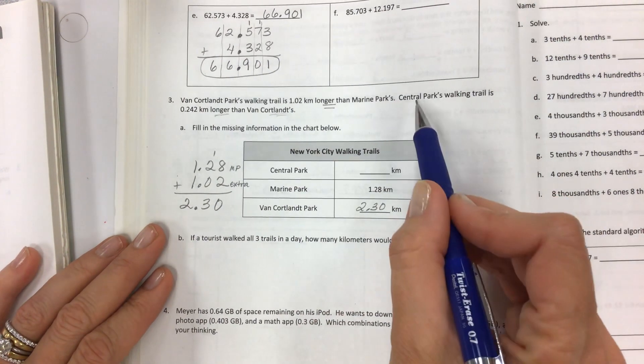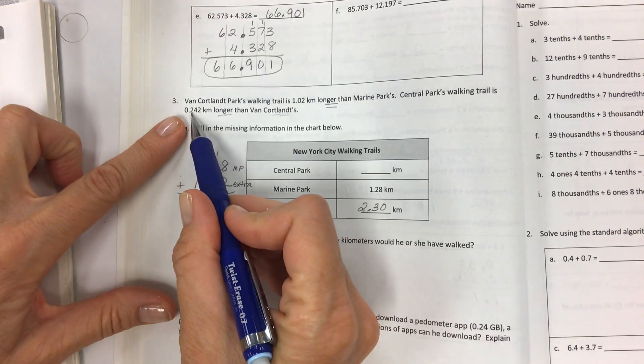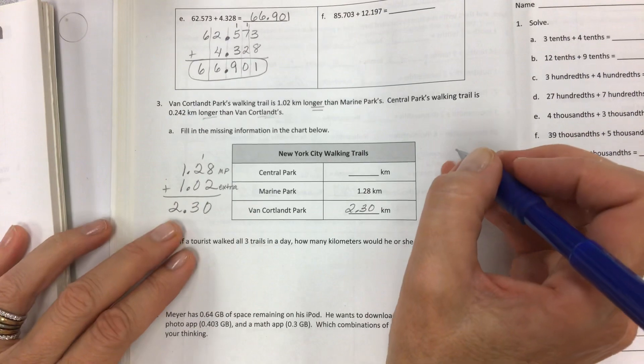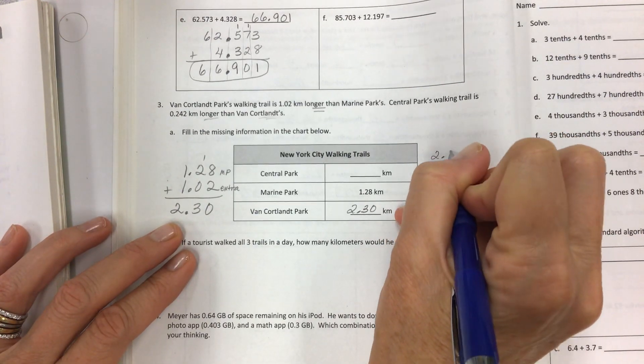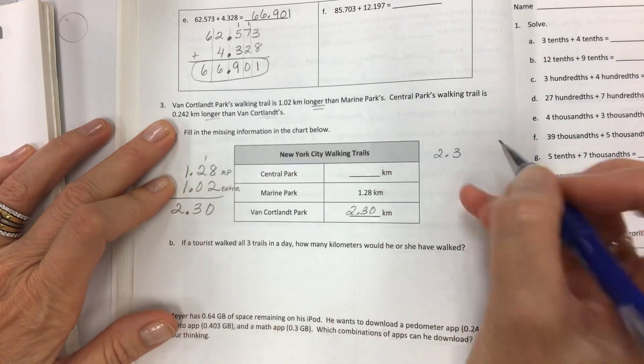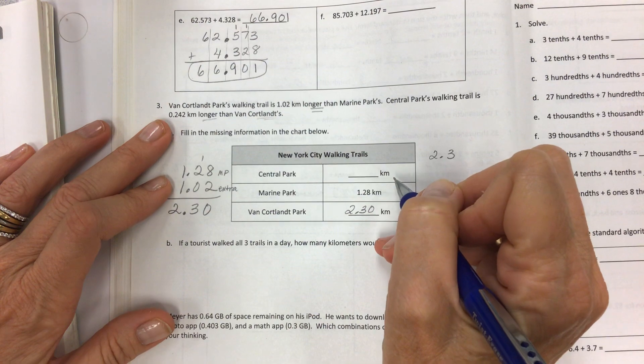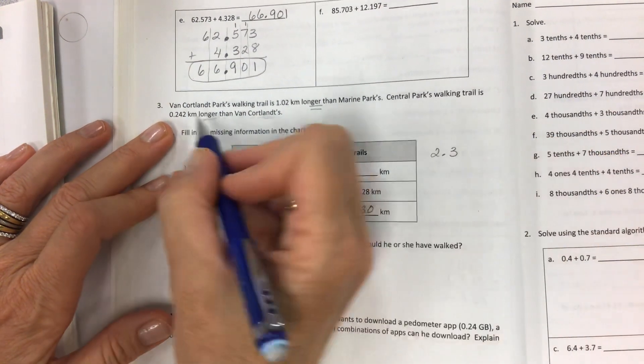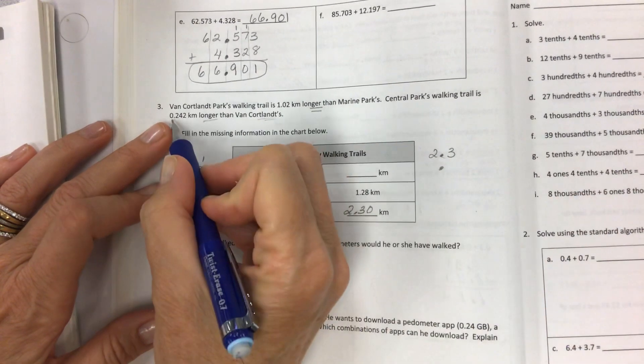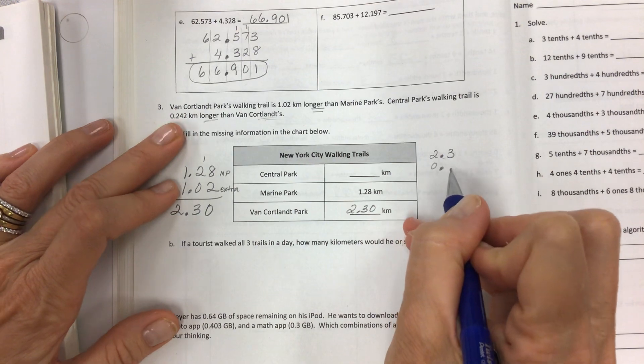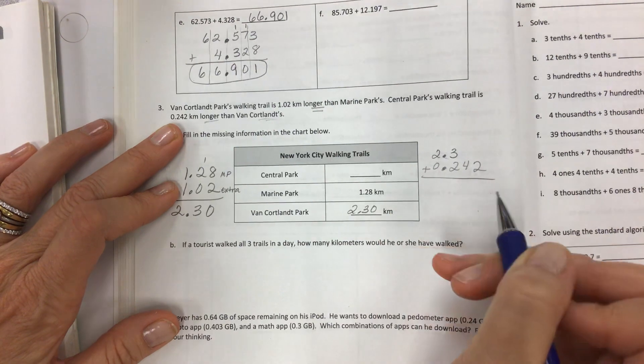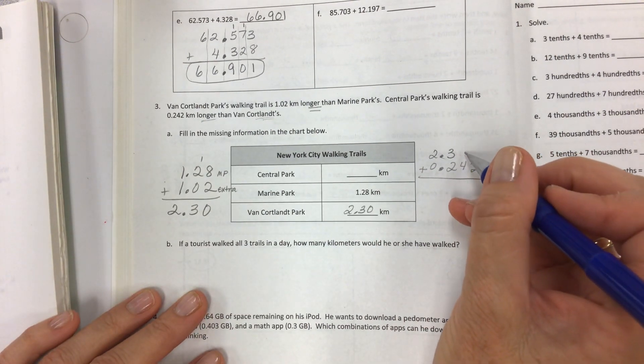Now that you have Van Cortlandt, Central Park's walking trail is 0.242 kilometers longer than Van Cortlandt's. So you have to take this amount and then we're going to tack on this much more so we can figure out how long Central Park's walking trail is. When you're adding this number to this number, line up by the decimal: 0.242.